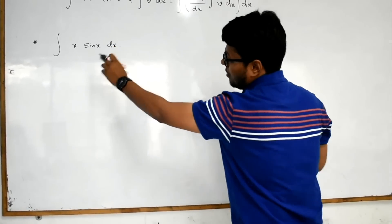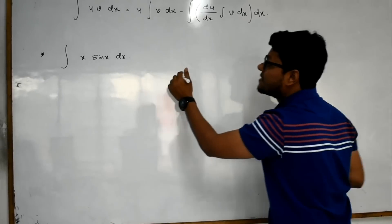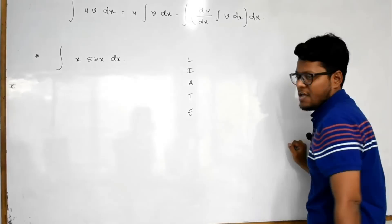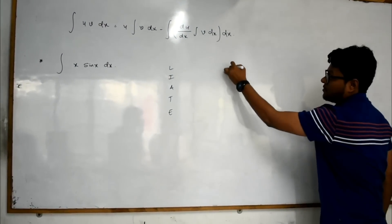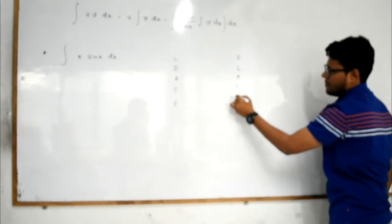But which one should be u and which one is considered as v? That has one rule which is LIATE. The rule is known as LIATE or some teachers consider it as ILATE.